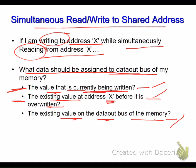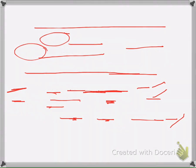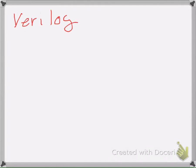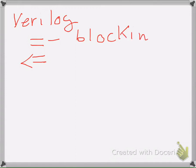Before going to the Verilog code to show the differences between these modes, I want to remind you of something very important in Verilog. We have two assignment operators: the `=` sign and the `<=` sign. You might think they are both equal, but they are not exactly the same. The `=` is called a blocking assignment, and `<=` is called a non-blocking assignment.